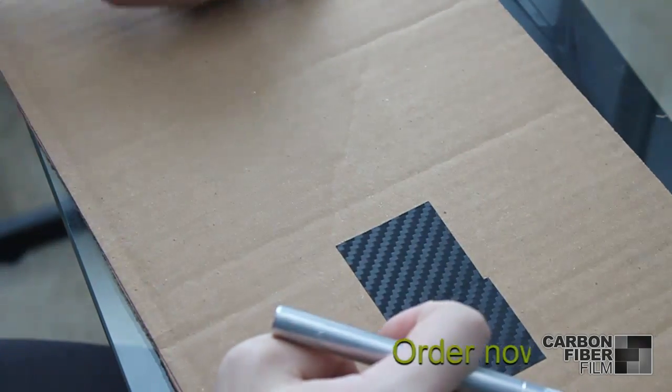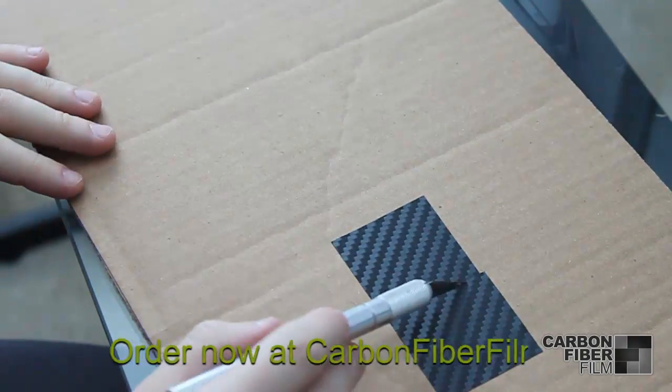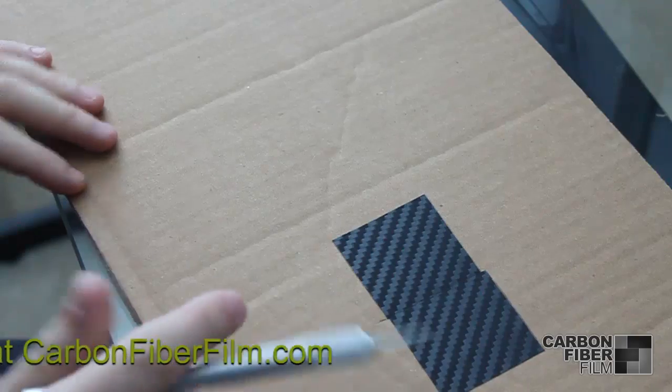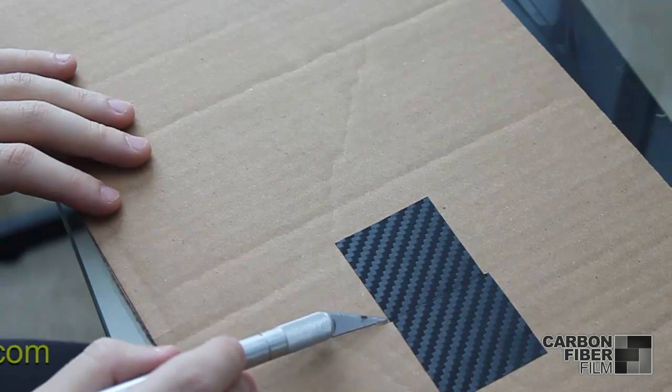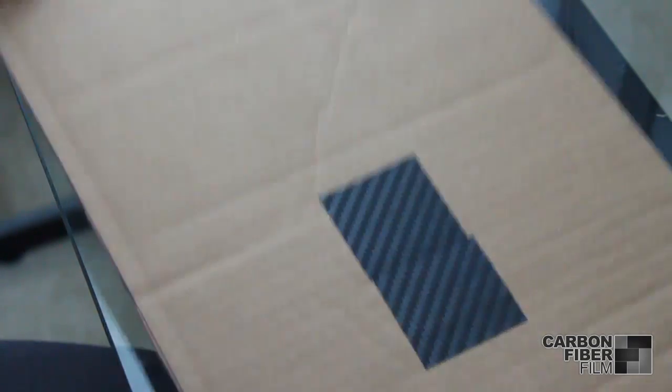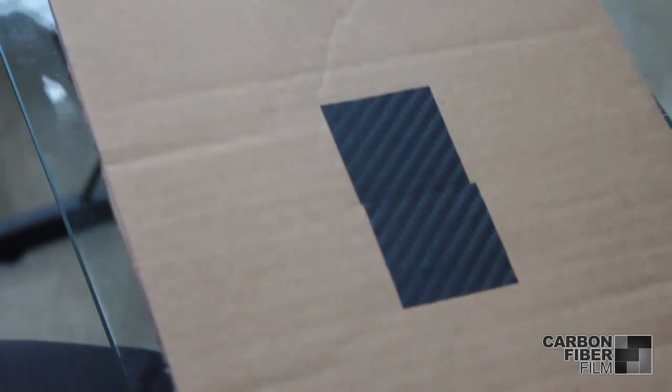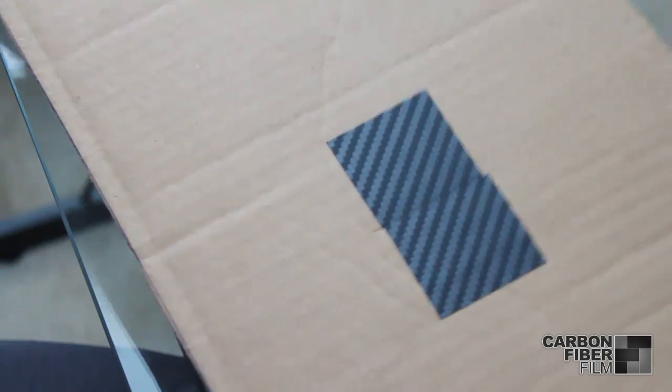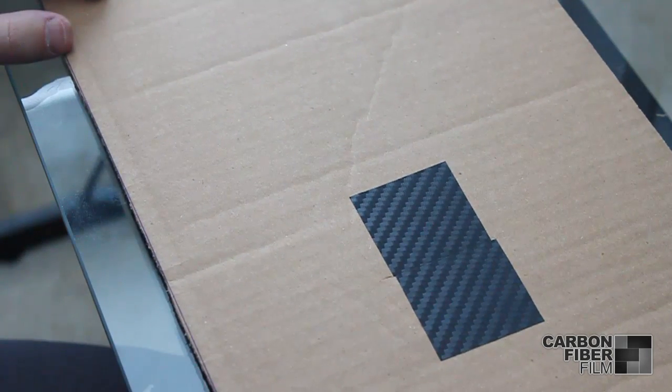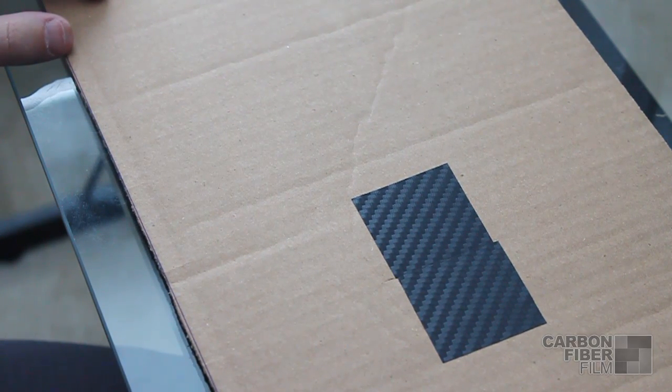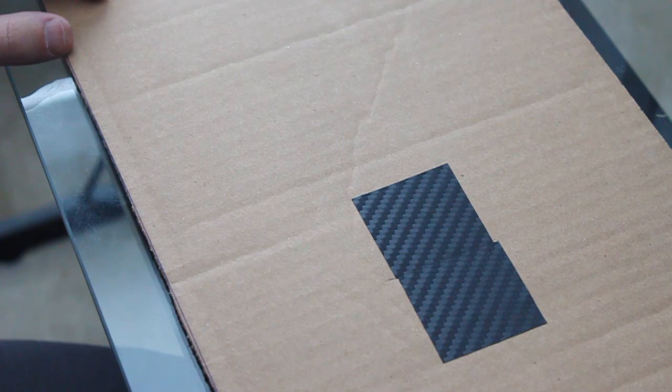What that allows you to do is create a seam that matches the pattern, but without having one overlay over top of the next. As you can see, there is still a seam, but you only see it at the right angles. That's as good as you can get when extending the width of 3M carbon fiber vinyl.